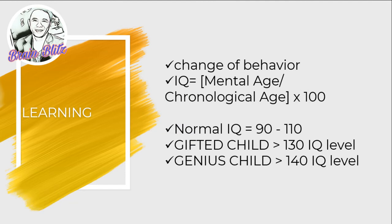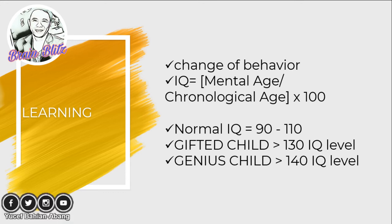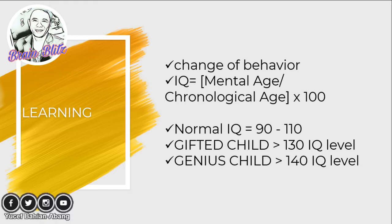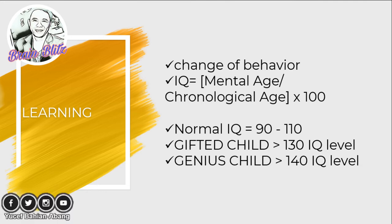Learning is measurable through a change in behavior or psychomotor skills. It is measured through the intelligence quotient, computed with the formula: mental age divided by chronological age, times 100. An IQ of 90 to 100 is considered normal. An IQ above 130 indicates a gifted child, and an IQ above 140 is labeled as genius.